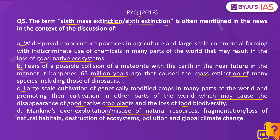The right answer to this question is Option D. The sixth mass extinction, also called the Anthropocene extinction, is an ongoing extinction event of species as a result of human activity. Scientists suggest the sixth mass extinction is underway because the world is already witnessing huge species losses every year.